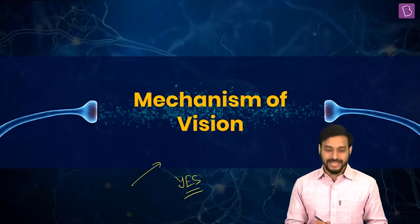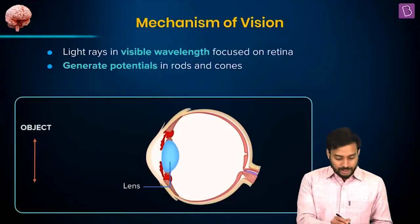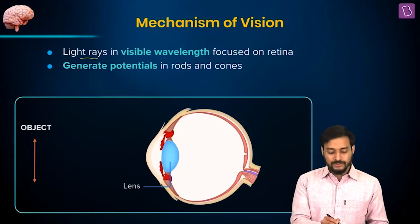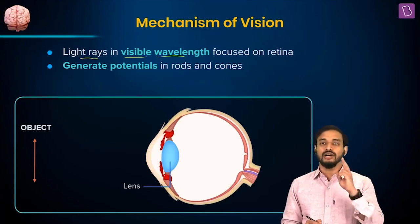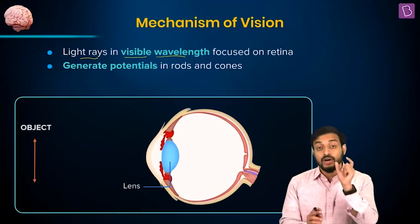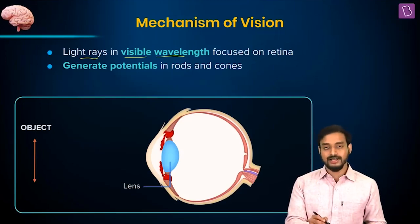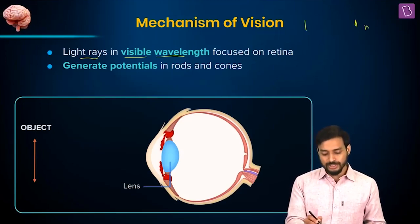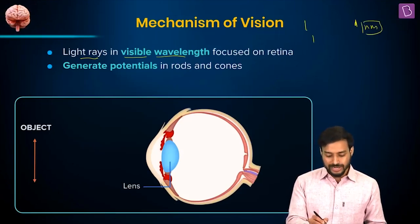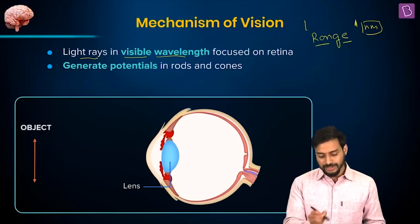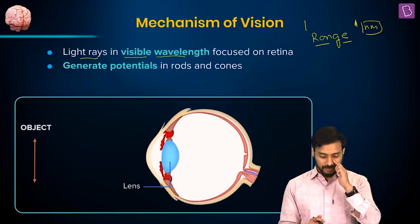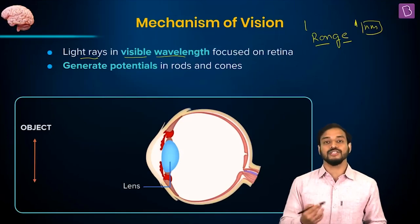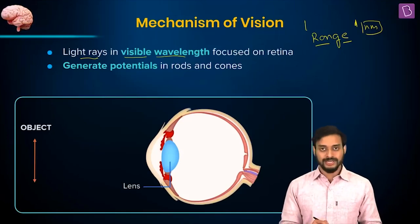The light rays in visible wavelength — please note this word. We cannot perceive light at all wavelengths, only the visible wavelength. How many of you can answer: what is the value in nanometers for the visible range? Physics students who will be using this concept in biology — tell me the range. I'm not going to give you the answer; these are easy questions.